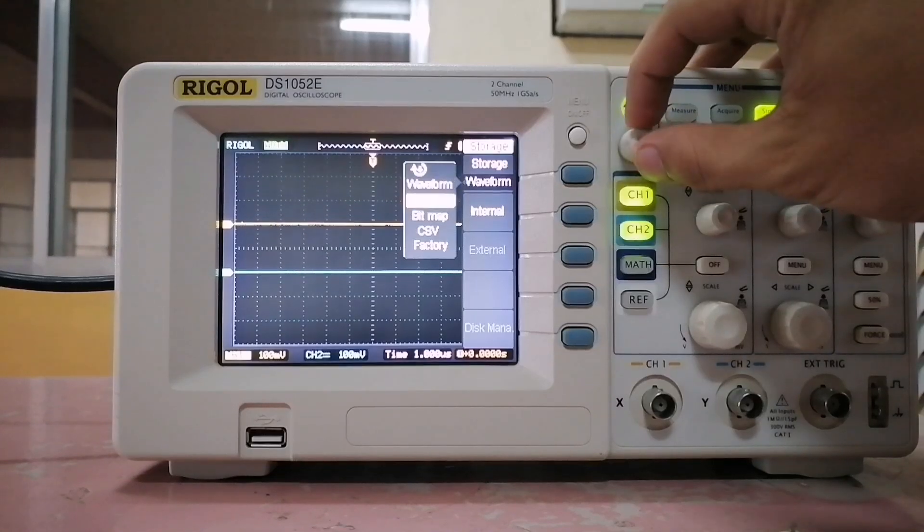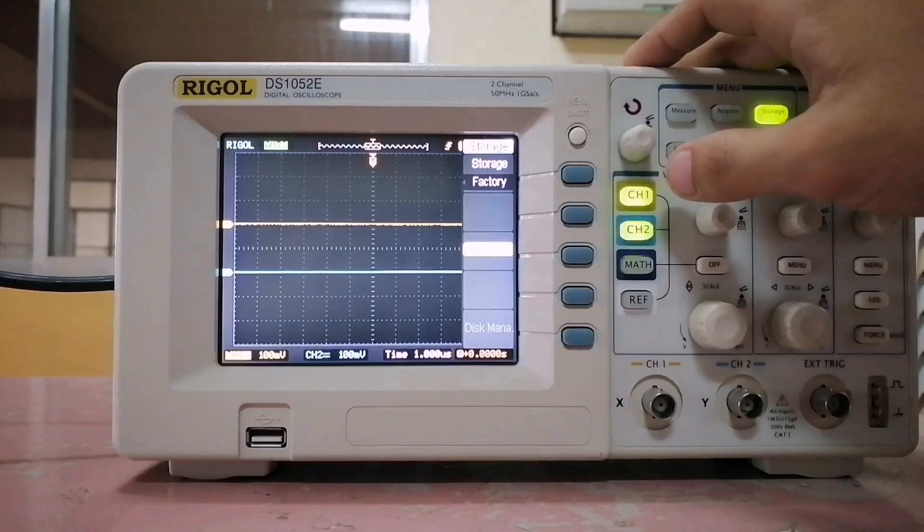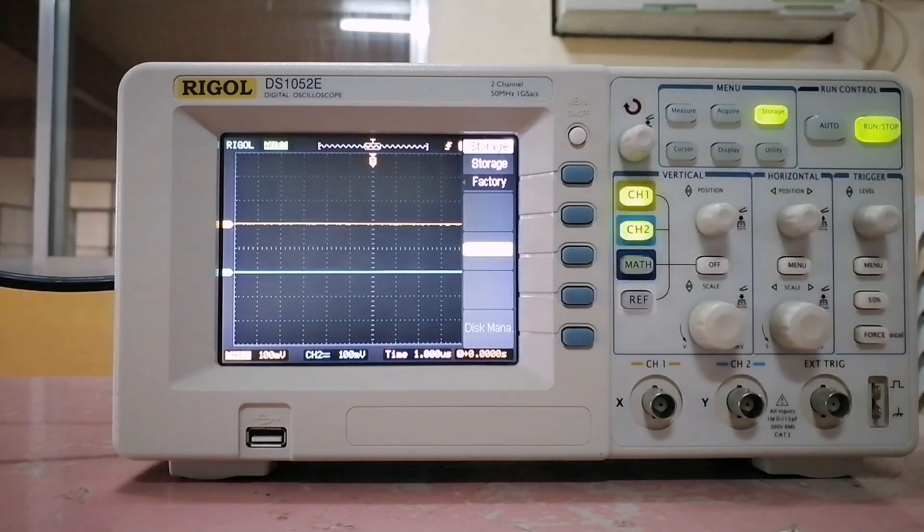Using the multi-function knob, scroll down to factory, and click to select. Then, press load.